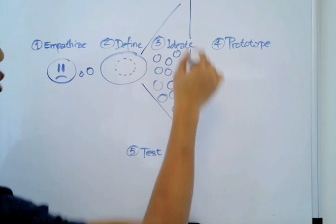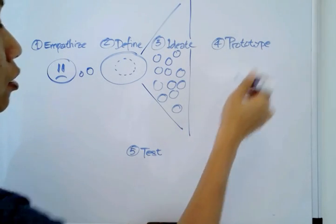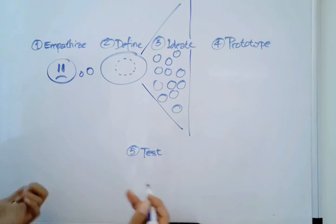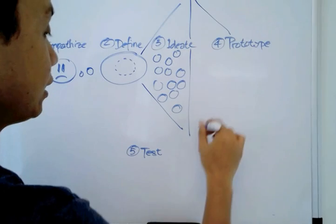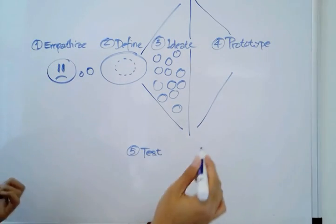After we come up with as many ideas as we can within this time limit, then we need to actually choose a few potential ideas to solve the problem.